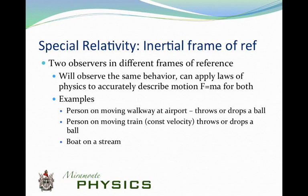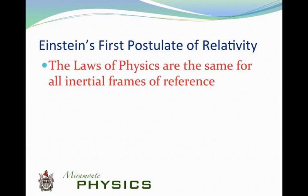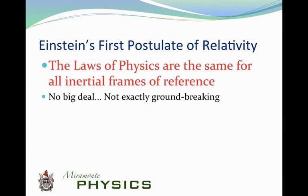Two observers in different frames, both inertial, will observe the same behavior because they can apply the same laws of physics to describe motion — F = ma, Newton's laws. A person moving on an airport walkway, a person on a train, a boat on a stream — all inertial frames. Here is Einstein's first postulate of relativity: the laws of physics are the same for all inertial frames of reference. That doesn't seem like a big deal — what's so surprising about it?